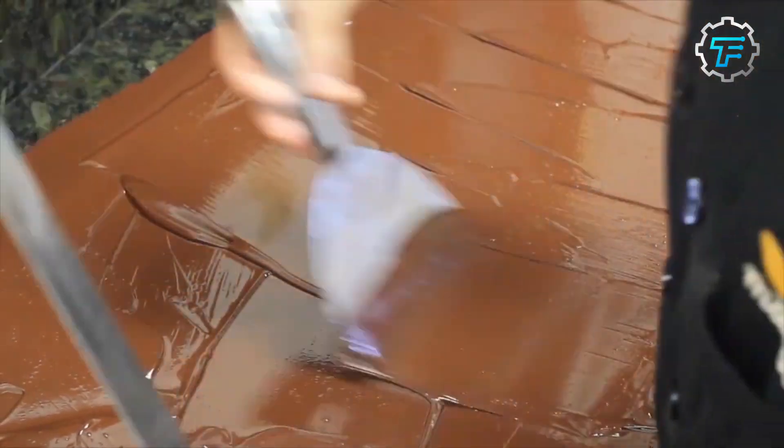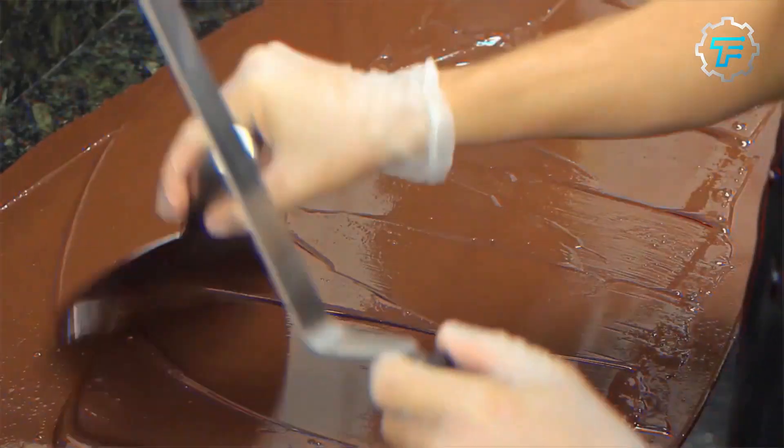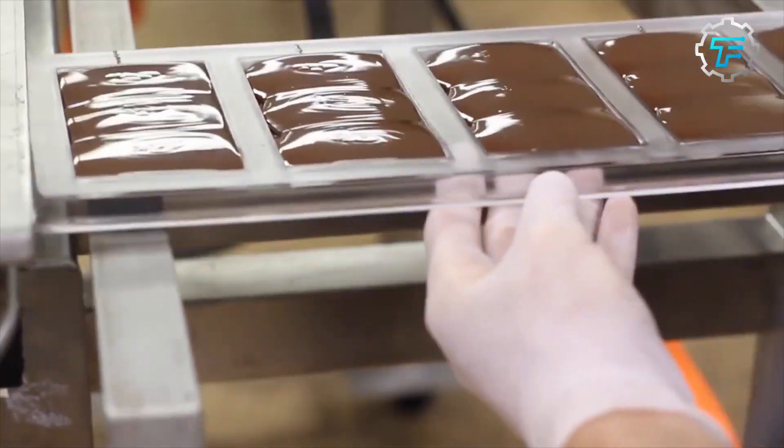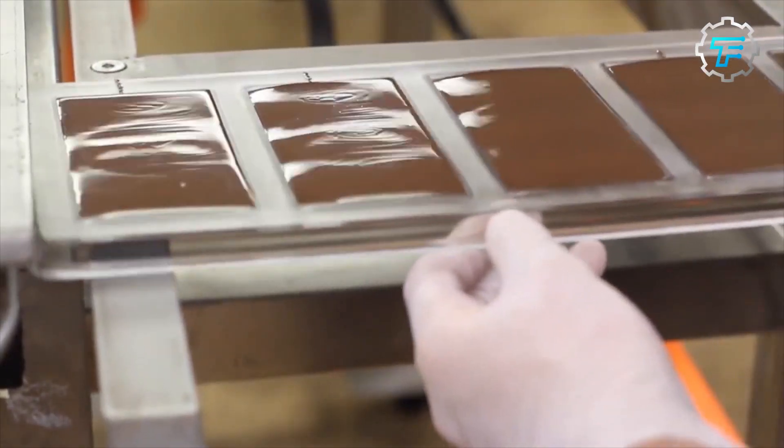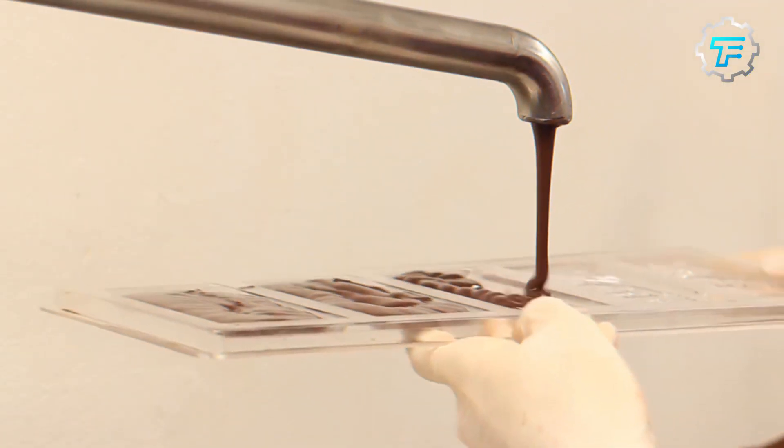Step nine, tempering. Once the chocolate has been perfectly conched, it moves to the tempering stage. This process gives Dove chocolate its glossy appearance and satisfying snap. The chocolate is slowly heated and cooled in the tempering machine, aligning its fat molecules and ensuring a stable crystal structure.